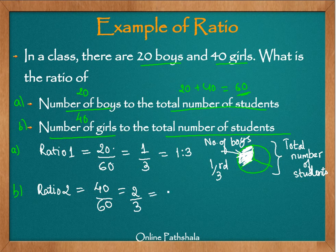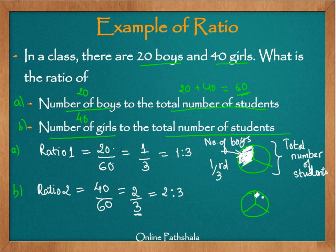This ratio can be represented as 2 is to 3. So the ratio of the number of girls to the total number of students is 2 is to 3. Using this fraction, the girls are two-thirds of the total number of students. We can also represent that as a fraction — divide the circle into 3 parts and consider 2 parts out of 3. This entire circle represents the total number of students.